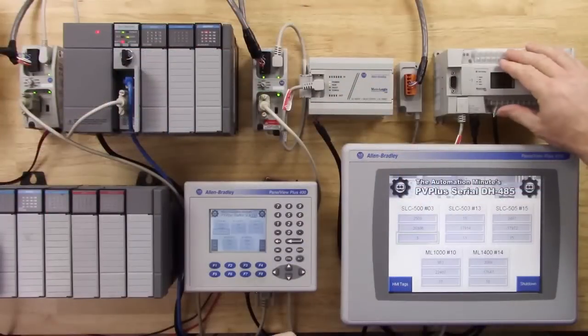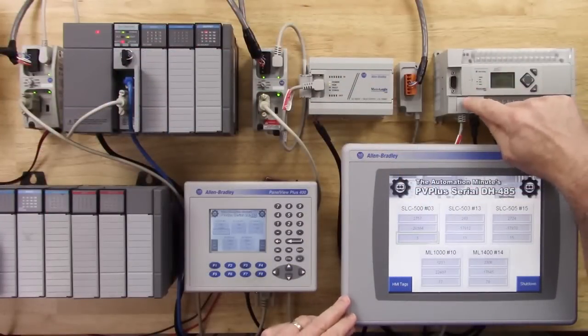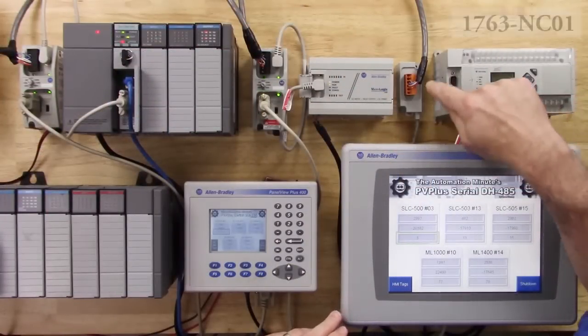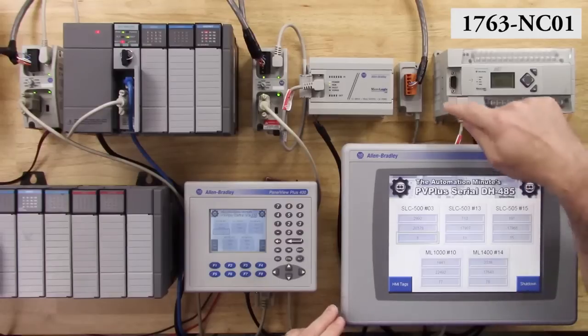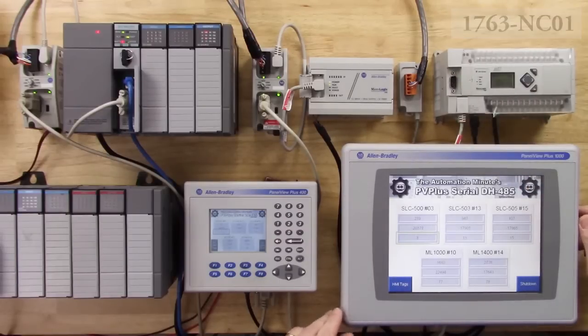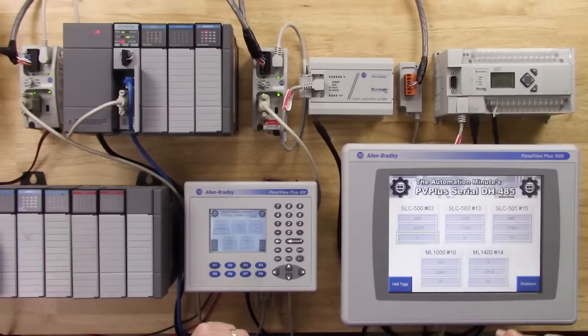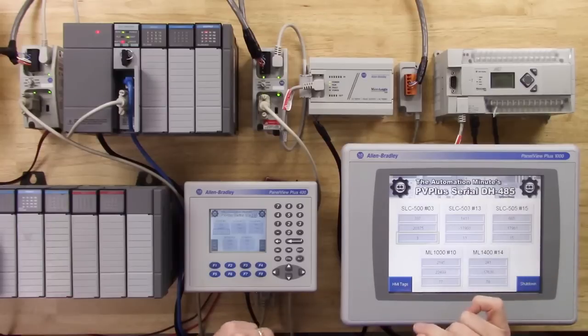And as we look at the MicroLogix 1400, I have to connect the channel zero to an MC01 cable. And that cable goes right on to the Data Highway 45. So I have that port set up to the Data Highway 45, address number 14.